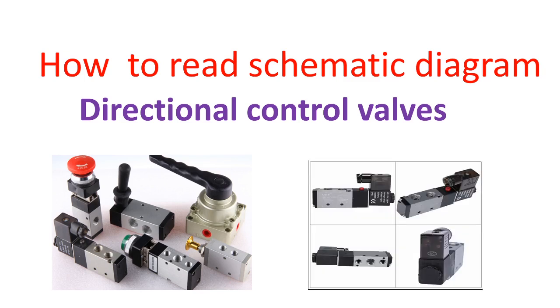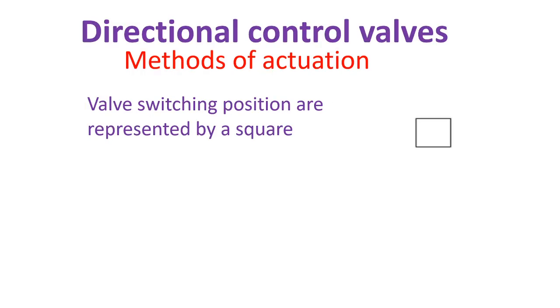One of the basic directional control valves is the two-way valve, which stops flow or allows flow. A garden faucet is a good example. Now let's get started on how to read directional control valves.